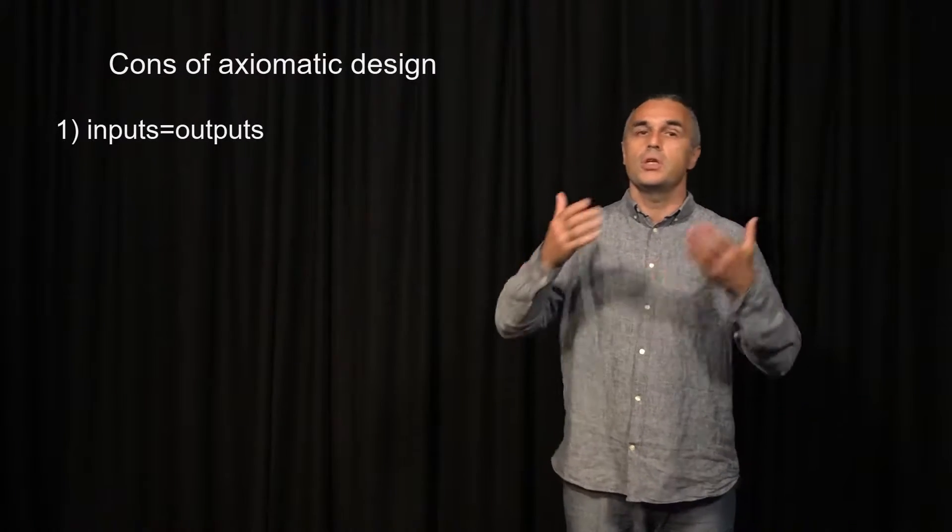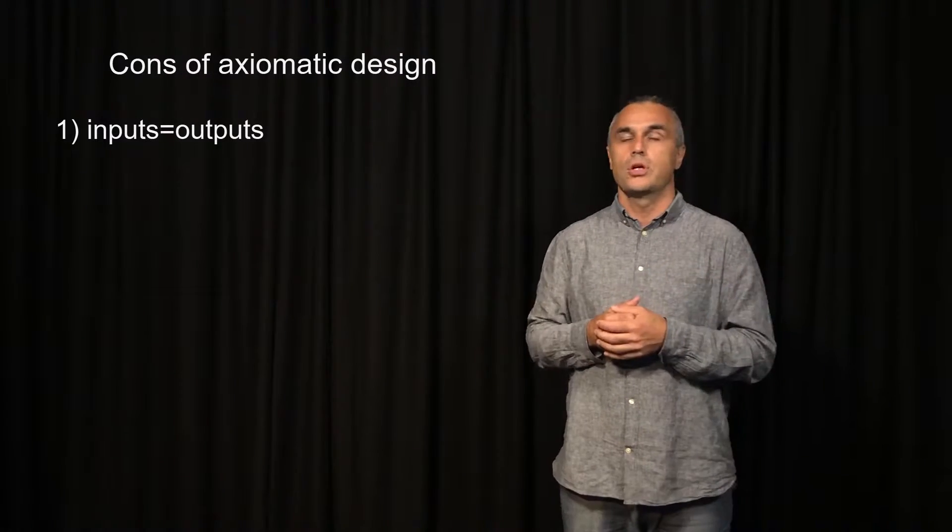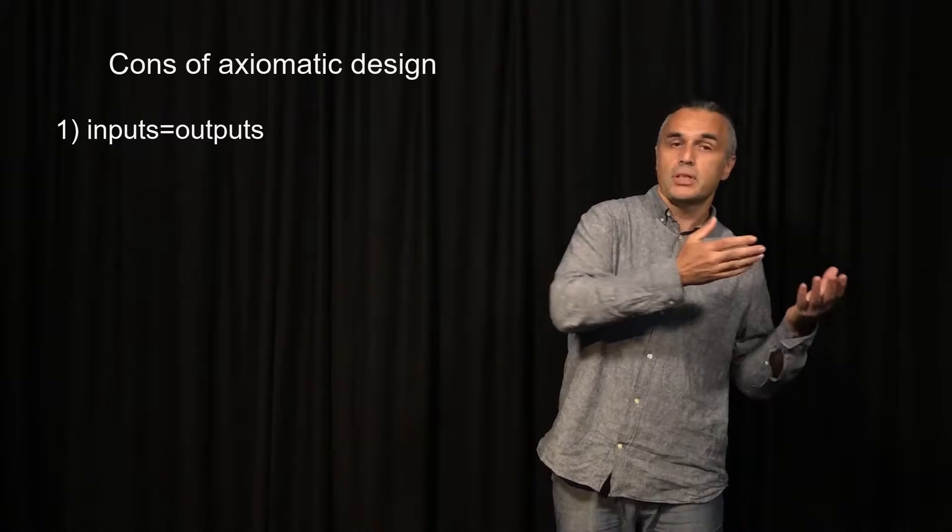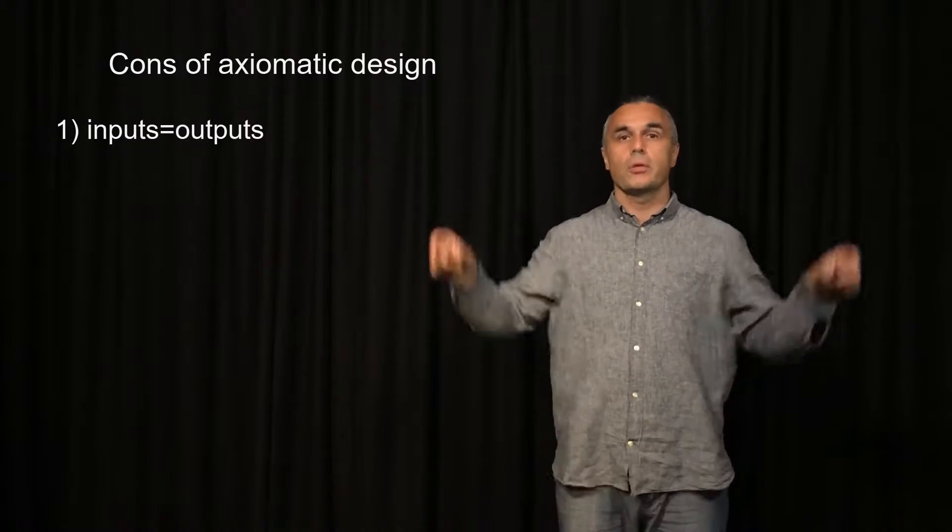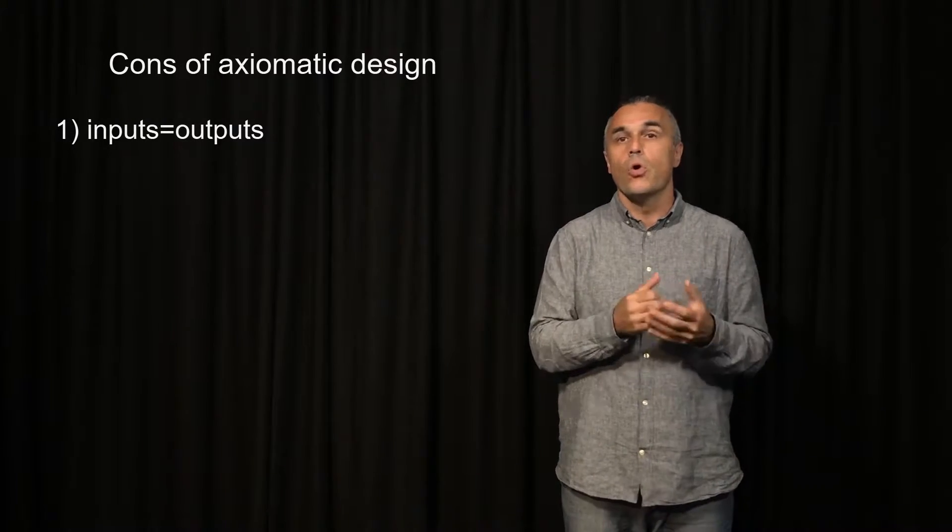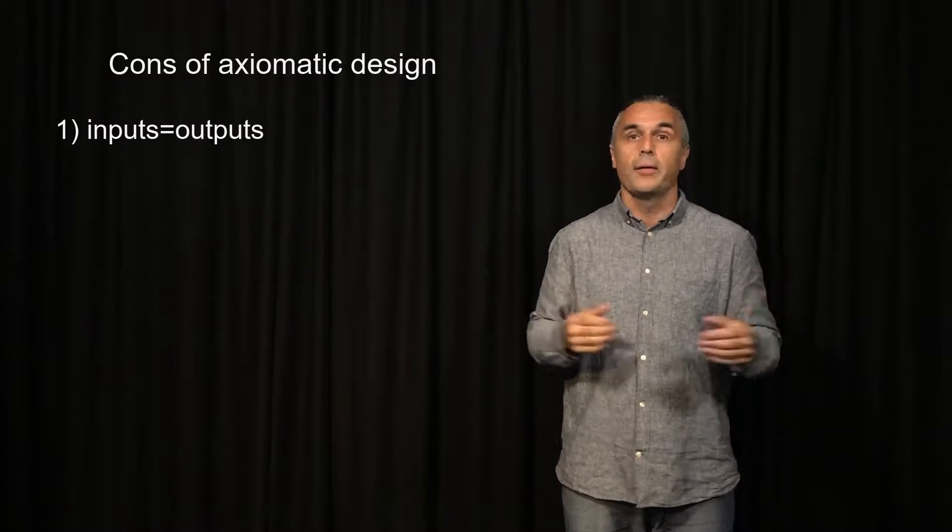What is bad and what is good about axiomatic design? There are several conditions that the system must hold before this axiomatic design instrument can be applied. One of the most painful conditions is that the number of inputs must equal the amount of outputs, or the amount of design parameters should equal the amount of functional requirements, or the design matrix should be square.